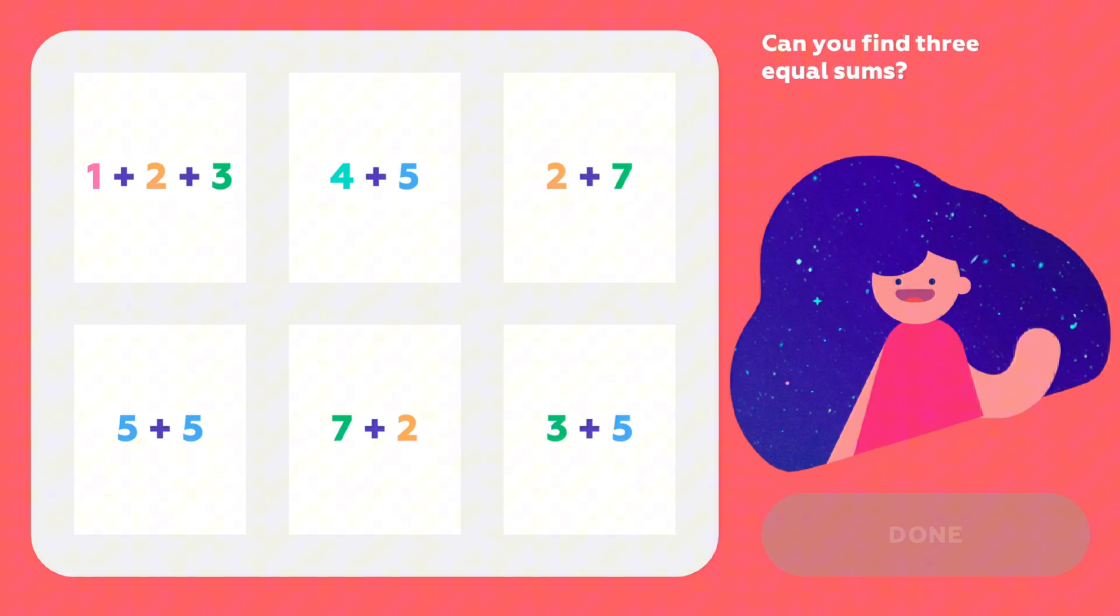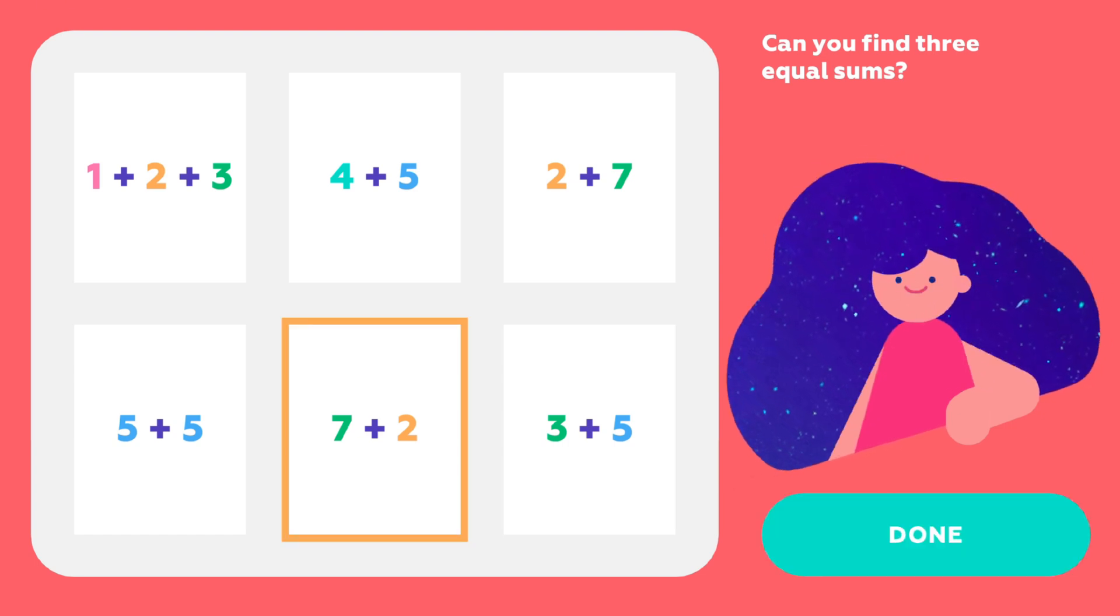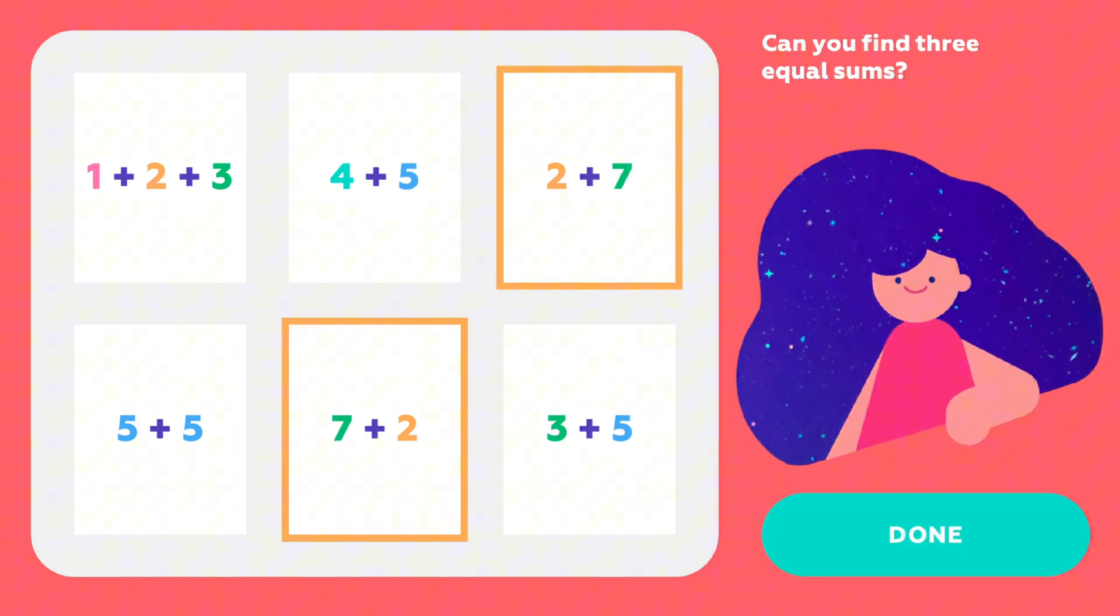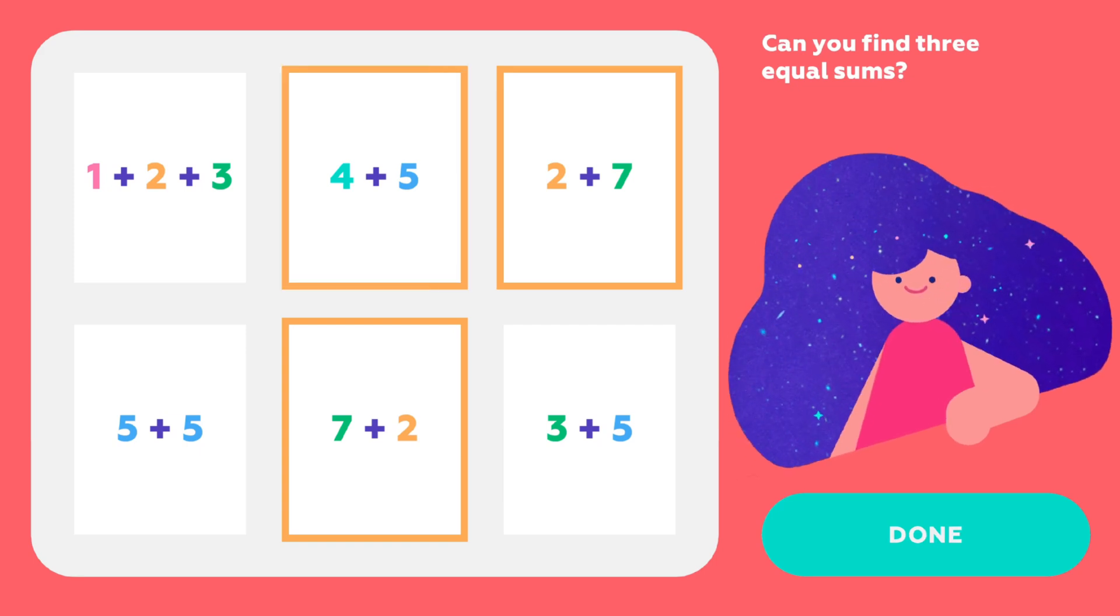Look, I see seven plus two. And two plus seven. They're equal. Both make nine. Where else do we get a sum of nine? I think I found it. Done.